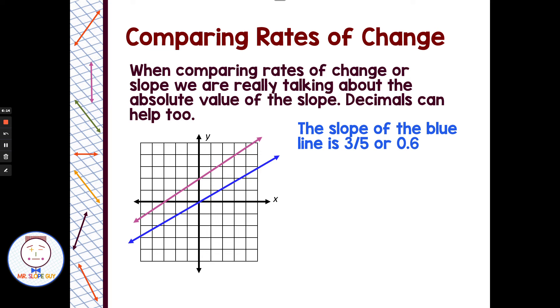Had a rise of 3, a run of 5. If we think of that as a decimal, it would be 0.6. Having a decimal form can make it easier to compare, unless you have whole numbers. But if you have a fraction, changing it to a decimal might make it easier. Then the pink line has a slope of 2 thirds, which as a decimal is 0.6 repeating, and I rounded the last digit to a 7.